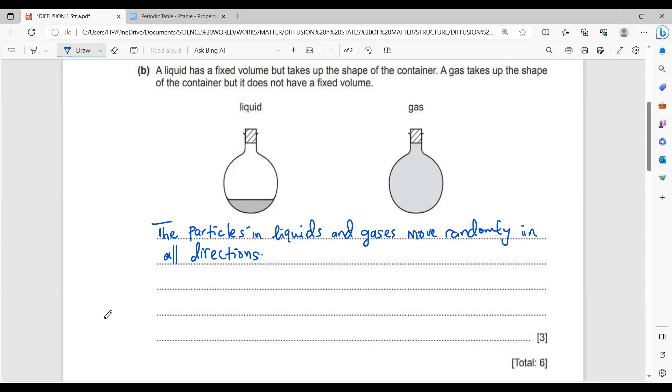Secondly, they also said liquid has a fixed volume, but gases do not have a fixed volume. So why is that so? You could tell them that for gases, there are weak forces of attraction between gas particles. And if they have weak forces of attraction, they easily separate.